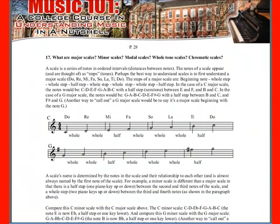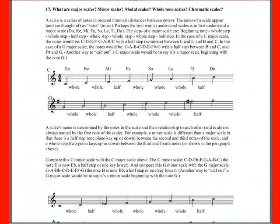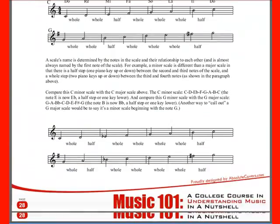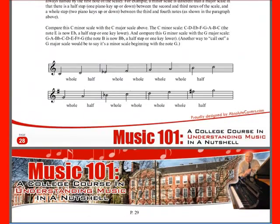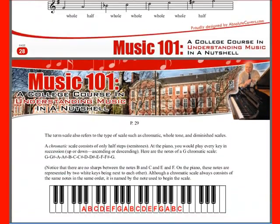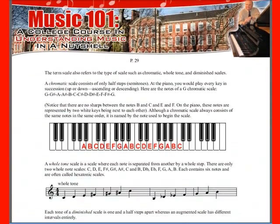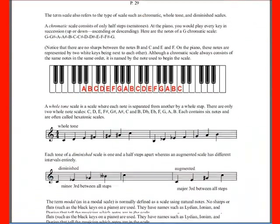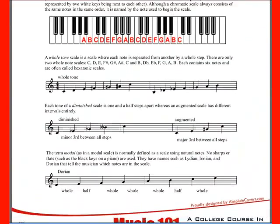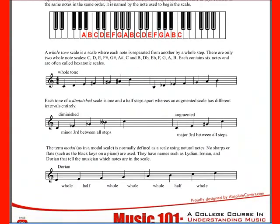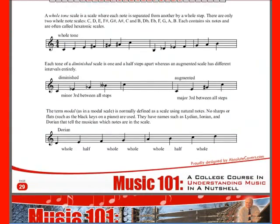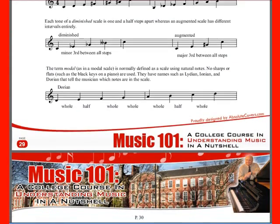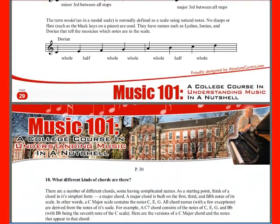This talks about scales — major scales, minor scales, modal scales, whole tone scales, chromatic scales — they're all different scales, and you need to know about them and how they work. Diminished scale too, there it is. A Dorian scale, which is a mode.